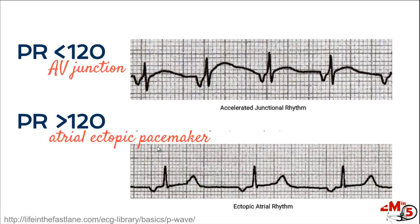When you have an ectopic atrial pacemaker, look at the PR interval. If the PR interval is less than 120 ms, it's coming from somewhere junctional. If it's greater than 120 ms, that means you have an atrial ectopic pacemaker — the beat is initiated from somewhere in the heart other than the SA node.